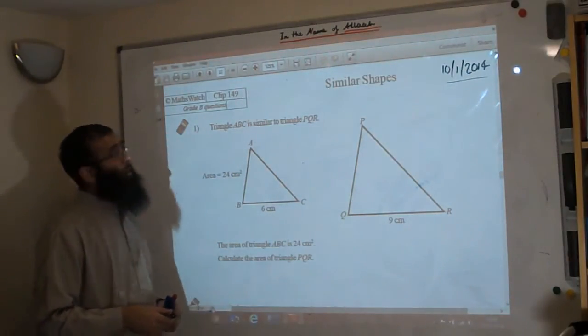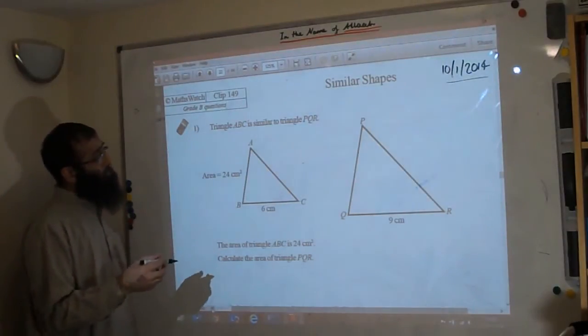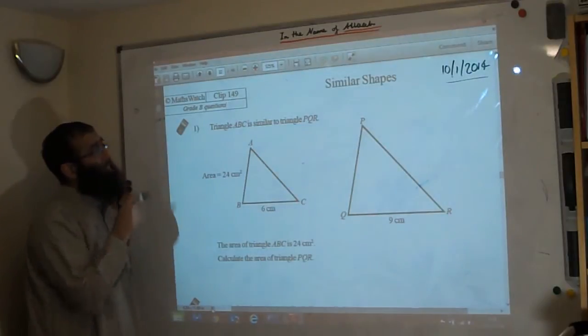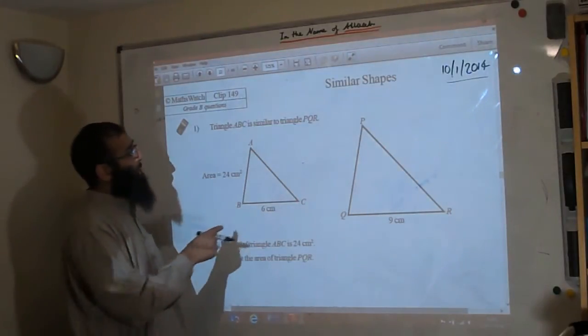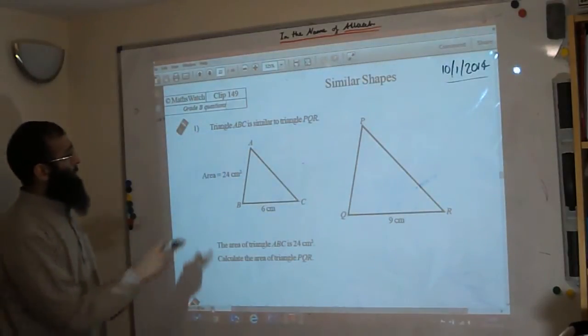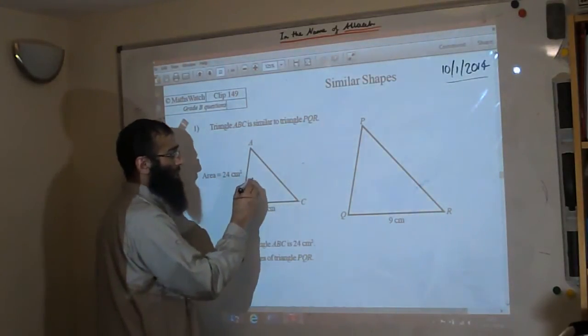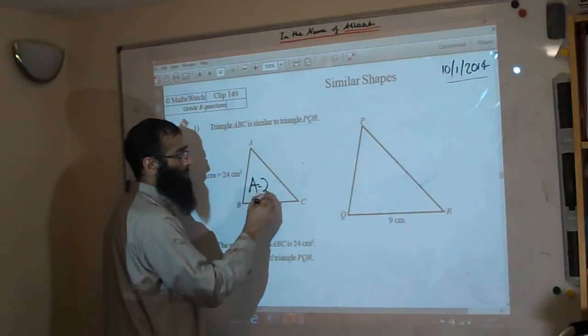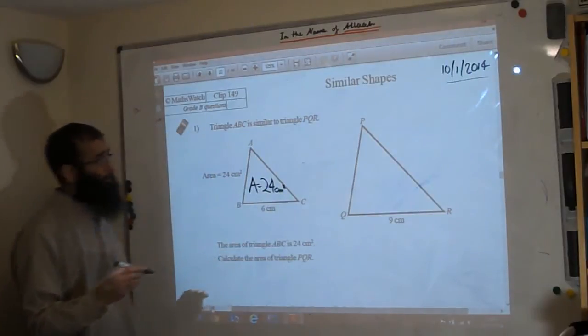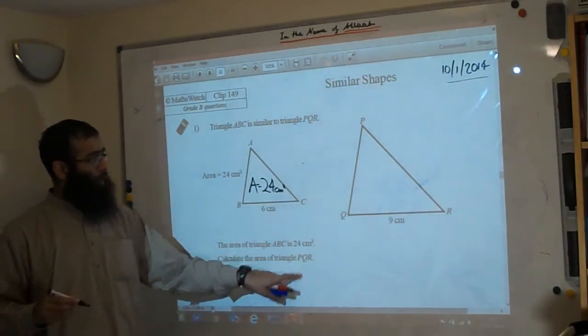Okay, let's have a look at this topic. First of all, question number one: triangle ABC is similar to triangle PQR. So here's ABC, there's PQR. We've been told that the area is 24 centimeters squared of this one, so I'll put that inside for extra emphasis. Calculate the area of the triangle PQR.